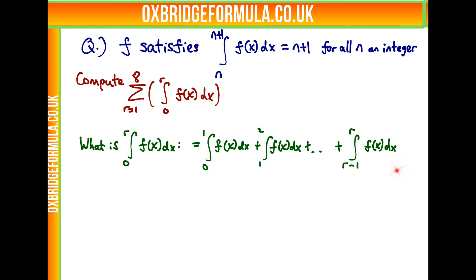So what are the values of each of these integrals? Well, by the identity, this first integral is 1, the second integral is 2, and all the way up to this last integral which is r. So we're left with this.